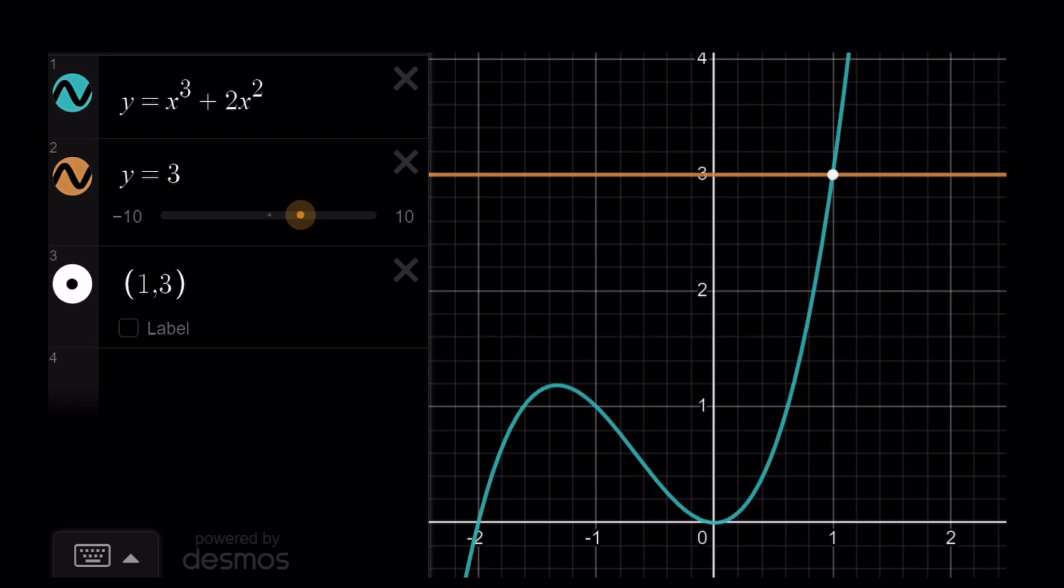Okay, so this is my cubic. As you can see, it kind of curves. It has a maximum and a minimum, but its maximum value, local maximum, is less than 3.